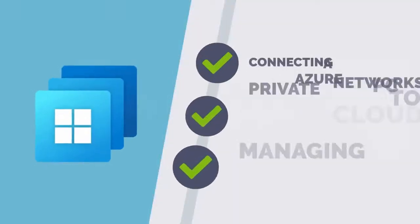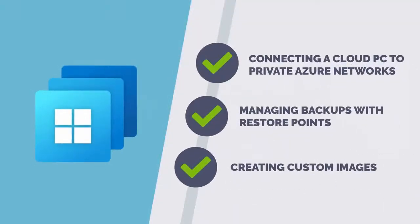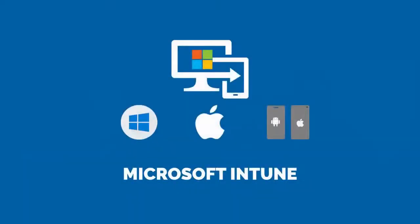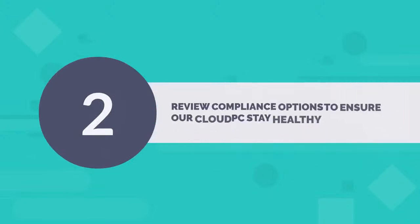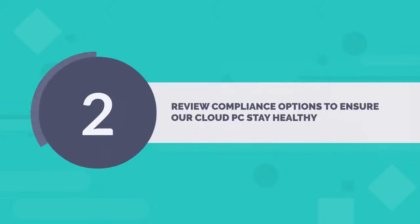Learn the technical requirements of Windows 365 and the client options to access cloud PCs. Next, explore advanced options, including connecting a cloud PC to a private Azure network, managing backups with restore points, and creating custom images. Once the cloud PCs are deployed, move on to managing Windows 365 with Intune. Organize cloud PCs into groups and use filters to target configuration settings. Then review compliance options to ensure our cloud PCs stay healthy.